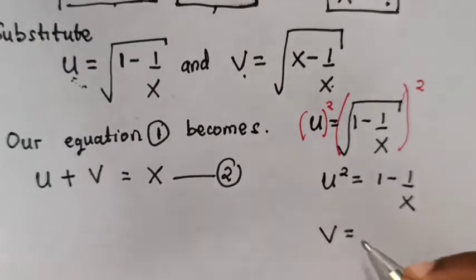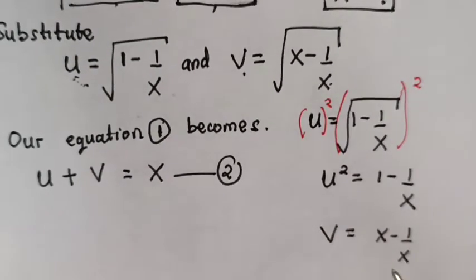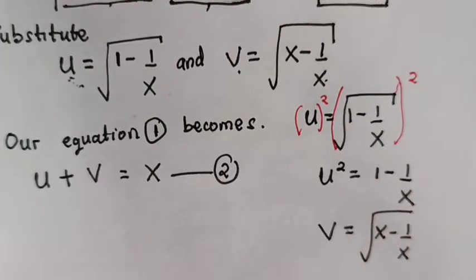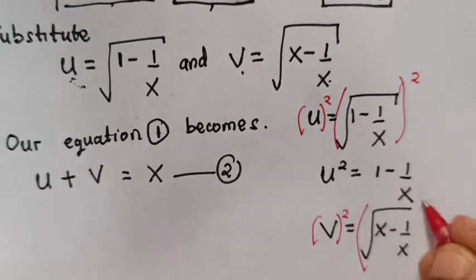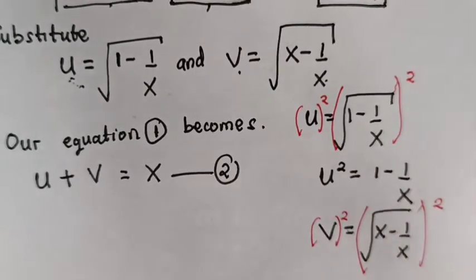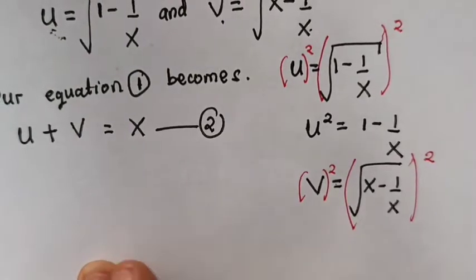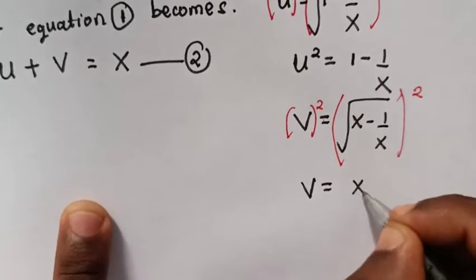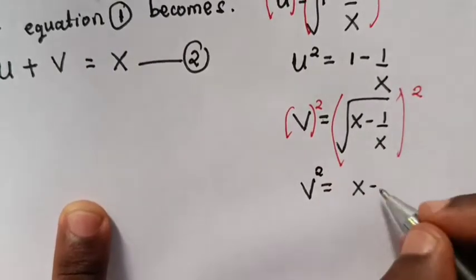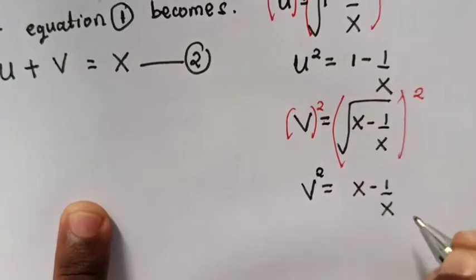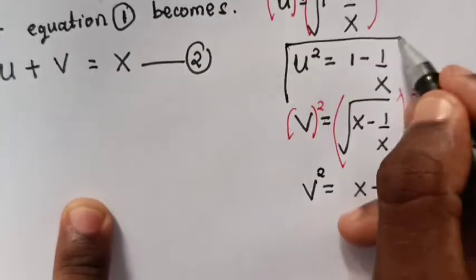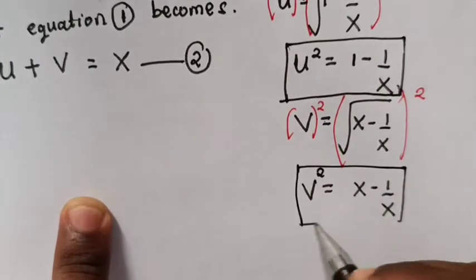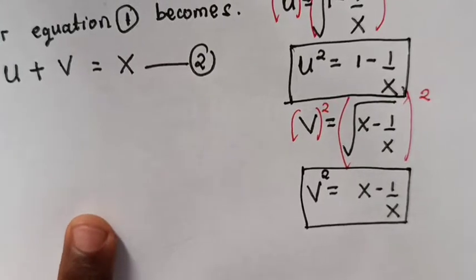v is equals to the square root of x minus 1 over x. We square v again, so v squared will be equals to x minus 1 over x. Note the value of u squared and the value of v squared because we'll use them later.